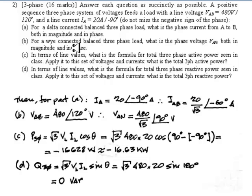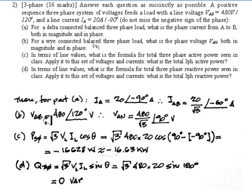Part B: for a Y-connected balanced three-phase load, what is the phase voltage VAN in magnitude and phase? In a Y, we know the line voltage VAB = 480∠120° volts. So the phase voltage VAN has magnitude 480/root 3, and its phase is 30 degrees less than that of the line voltage, giving 90 degrees.